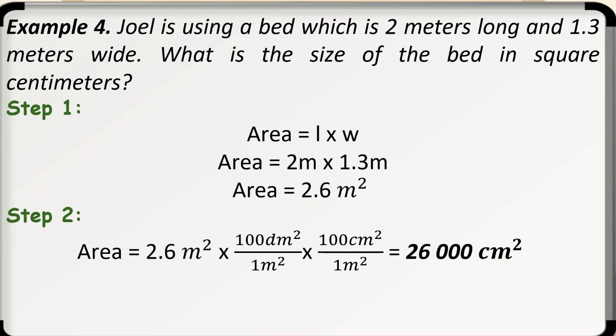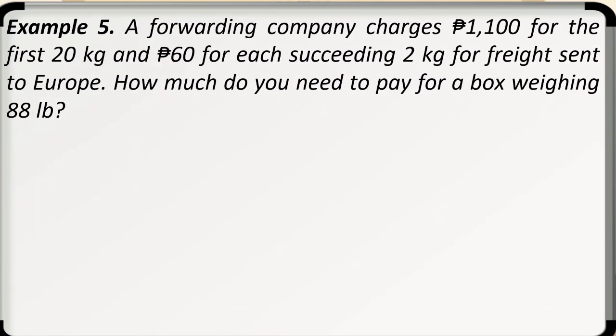And lastly, example number 5. A forwarding company charges 1,100 pesos for the first 20 kilograms and 60 pesos for each succeeding 2 kilograms for freight sent to Europe. How much do you need to pay for a box weighing 88 pounds? Here is our solution. Step 1. We need to convert 88 pounds first to kilograms since the other two measures are in units of kilogram for us to easily compute the charges.